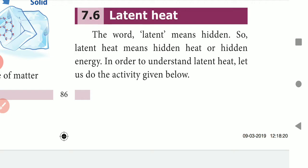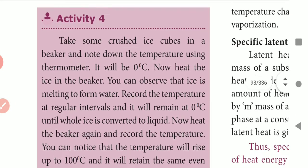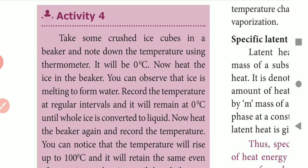To understand latent heat energy, consider this activity: take some crushed ice cubes in a beaker and note the temperature using a thermometer — it will be 0 degrees Celsius. Now heat the ice cubes and observe that the ice melts to form water. If you record the temperature at regular intervals, it will remain at 0 degrees Celsius until the whole ice is converted to liquid.